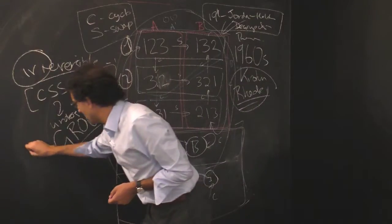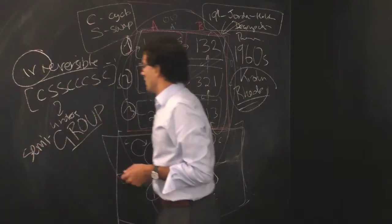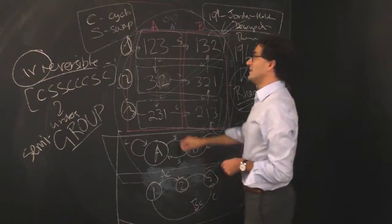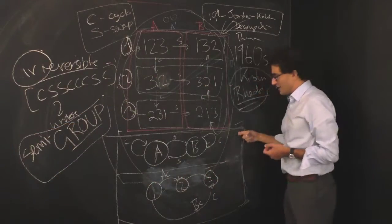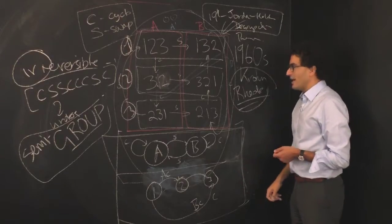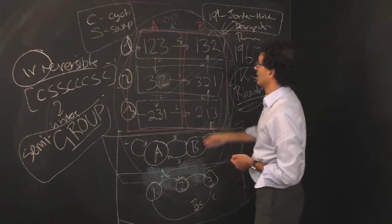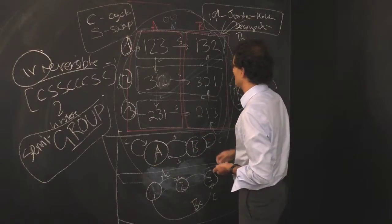Instead of it being a group, it's now what they call a semi-group, right? But amazingly enough, Krohn and Rhodes were able to prove that, in fact, you could do this decomposition here even if there were cases where there were operations, and I'll draw an operation that's irreversible now.